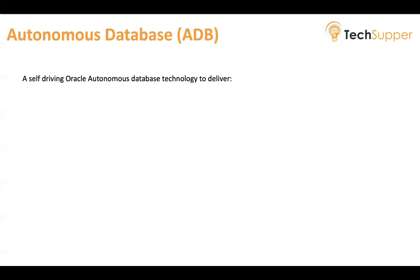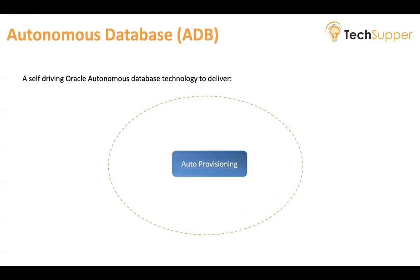Autonomous Database offers various capabilities. As the name suggests — Autonomous. When you need an Autonomous Database, it will be provisioned automatically. You click and your database will be ready. You don't need to do anything. Auto-provisioning is used to create your Autonomous Database. Auto-repairing: if something goes wrong with your Autonomous Database, it will be repaired automatically without any human intervention.